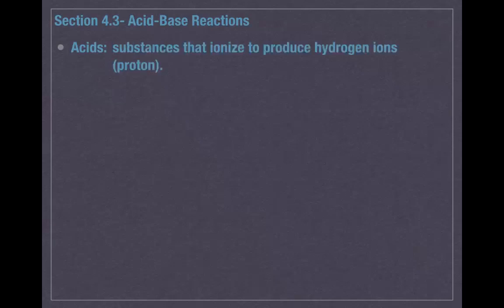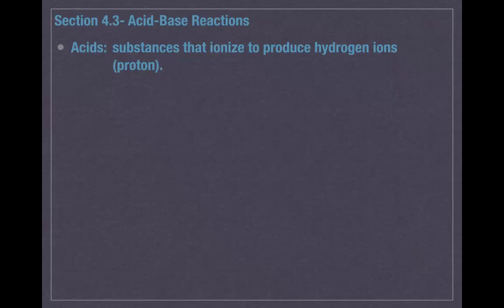First, we're going to review acids very briefly. Acids are substances that ionize to produce hydrogen ions, meaning when they're put into solution, the cation and the anion break apart, and the cation is the hydrogen ion. A lot of the time we refer to hydrogen ions as protons. A hydrogen atom has one proton and one electron, so if you form a hydrogen ion, you've removed that one electron and all that's left is simply a proton. That's why we sometimes call hydrogen ions protons — they're just one proton.